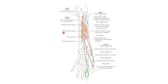The third muscle is the extensor pollicis longus, the tendon of which also reaches the thumb. As the word longus is mentioned, it is a long tendon reaching up to the distal phalanx. This extensor pollicis longus originates from the posterior surface of the ulna beneath the attachment of the abductor pollicis longus, along with the interosseous membrane. It descends down, crosses the wrist joint, and gets inserted onto the dorsal surface of the distal phalanx of the thumb.